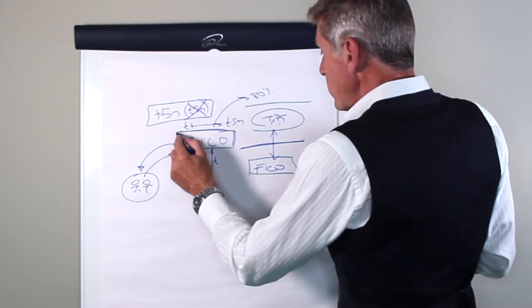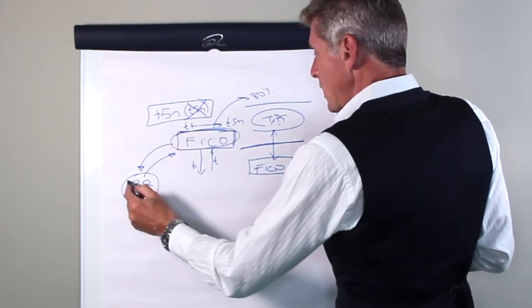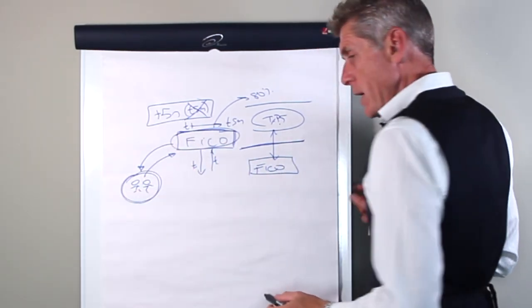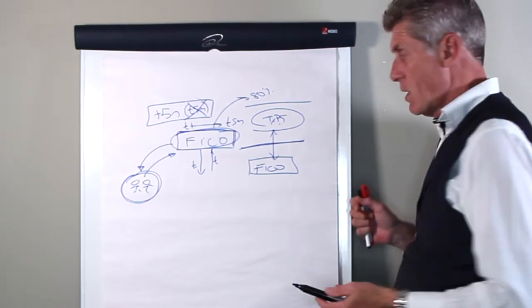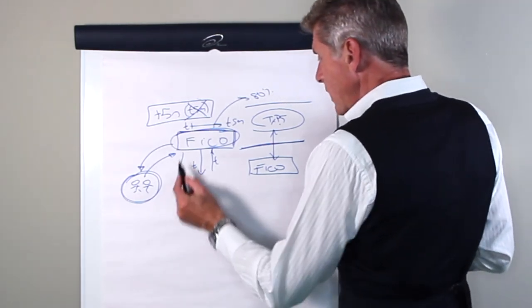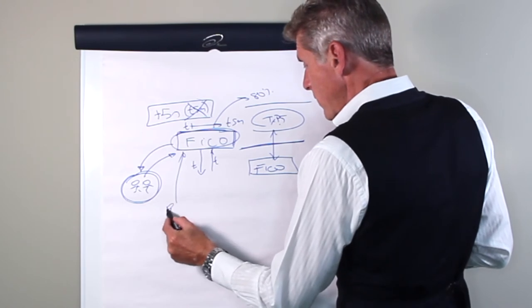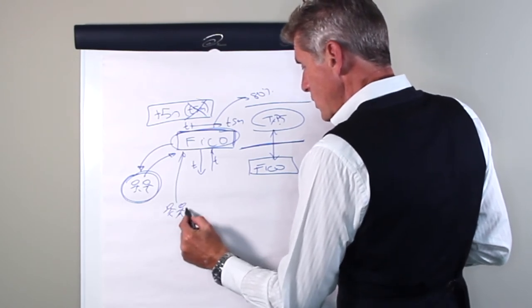And that will produce an instant reduction in the potential inheritance tax, and that's part of a medium-term plan. But the most important thing is management. If you're going to form one of these things and your mum and dad are going to be the only directors, what's going to happen as they get more elderly and they die? So you need to bring the next generation in.